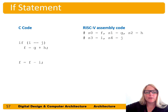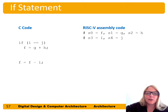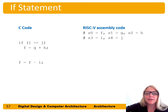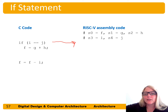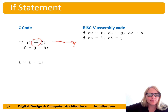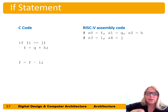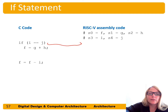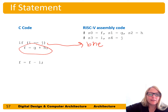We first pick some registers to hold our variables. Let's say s0 through s2 hold f, g, and h, and s3 through s4 hold i and j. Now we translate our code. It's tempting to use branch-if-equal here because we see equals-equals, but actually we want to do the opposite — branch if not equal — because if it's not equal, we want to skip over the next line.